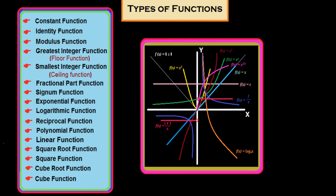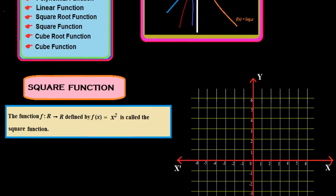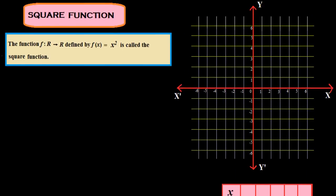Hi friends, in this session we study about the types of functions. In types of functions, we study about the square function. Let us first define what is the square function. Square function is the function f: R to R defined by f of x is equal to x squared, and this is called the square function.